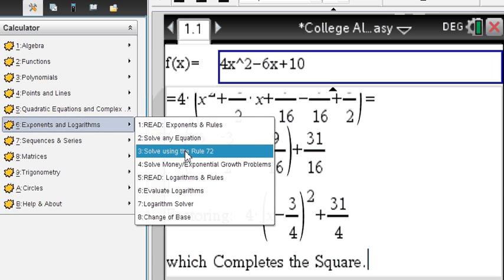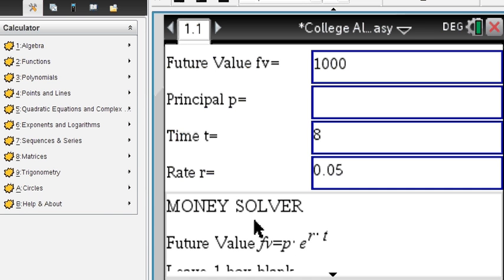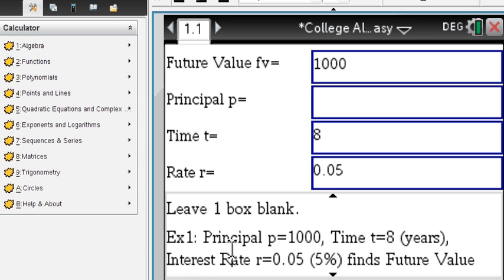Exponents. Used to solve any equation. Solve using the rule 72. You can see, here is an example. There is a money solver here and it gives you instructions: leave one box blank.